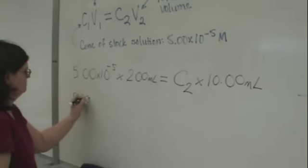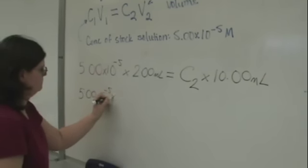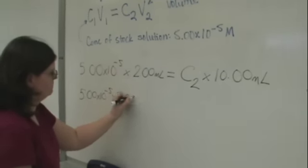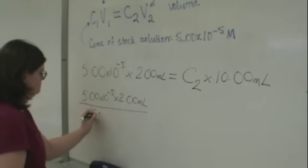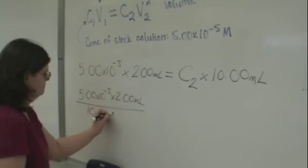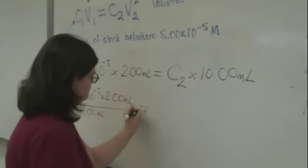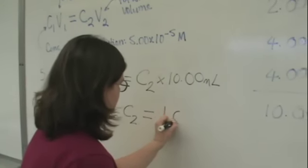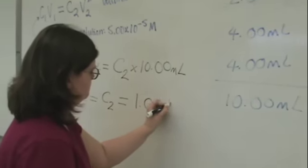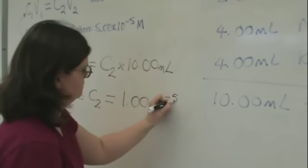We don't need to convert mLs to Ls, because the mLs will cancel out. So here we see that we can just divide 5.00 times 10 to the minus 5, times 2 mL by 10 mLs total, to get C2, which is equal to 1.00 times 10 to the minus 5 molar.